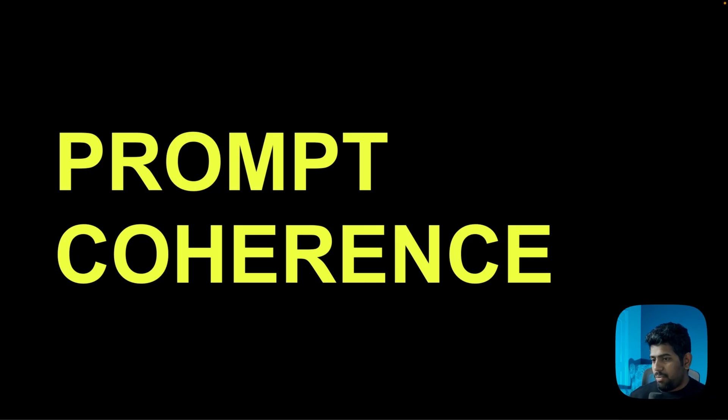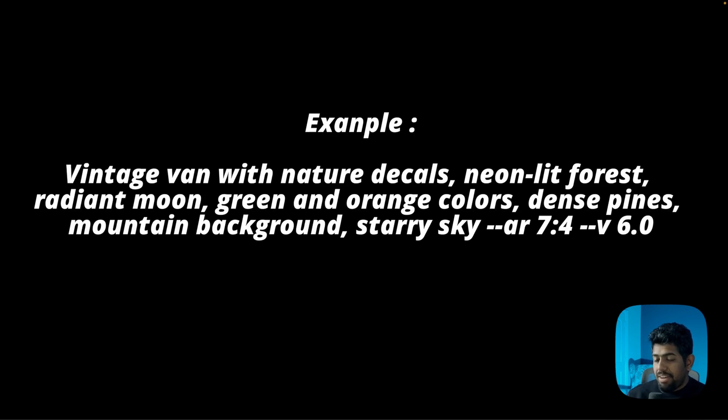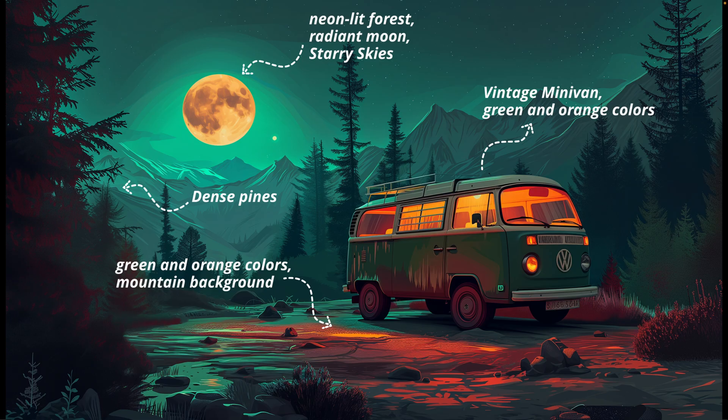One of the biggest features of Midjourney version 6 is prompt coherence, where every piece of text in your prompt is considered when generating an image. The model is way more sensitive to the prompt, producing better results because it considers everything you put in. It's more natural language focused — you don't need junk words like 4K or 8K detail anymore. Just based on whatever you request, it'll produce results.